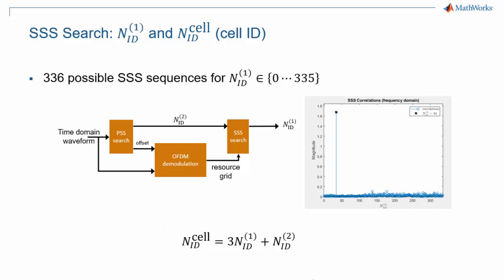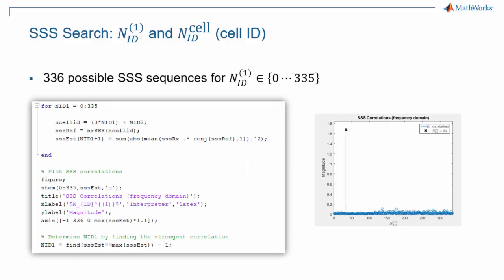This step shows a very clear peak for sequence number 34. As a result, the physical cell ID in this cell is 3 times 34 plus 0, or 102. The MATLAB code shows the simple process to determine the SSS. There's a loop that tries out all 336 possibilities and identifies the SSS with maximum correlation.